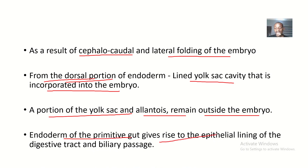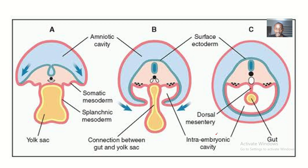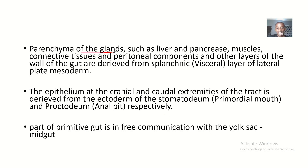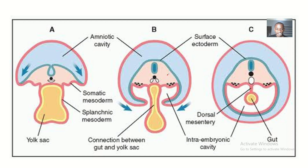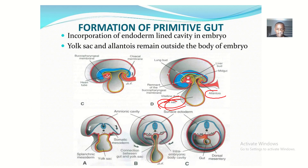The endoderm of the primitive gut gives rise to the epithelial lining of the digestive tract and the biliary passages. Later, the parenchyma of glands such as the liver and pancreas, along with muscles, connective tissues, peritoneal components, and other layers of the gut wall, are derived from the splanchnic or visceral layer of the lateral plate mesoderm.